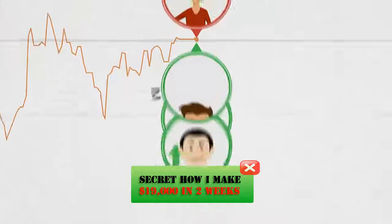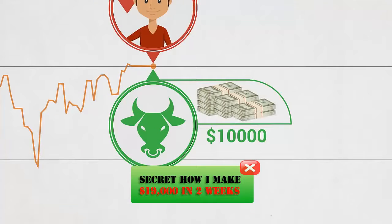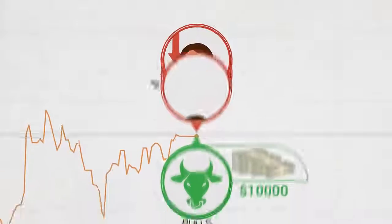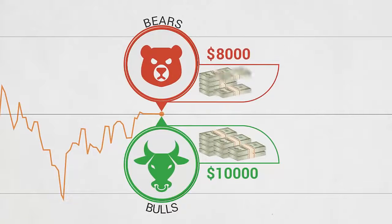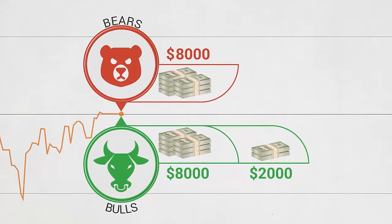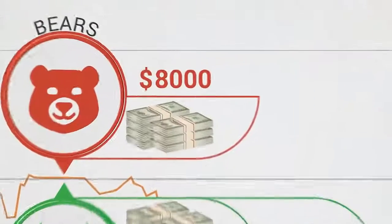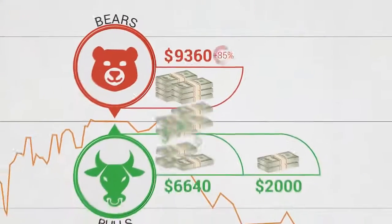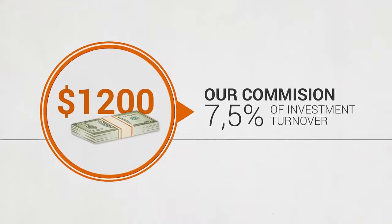But on the IQ Option platform, thousands of traders are trading at any given time. The group of traders along with Jim — let's call them the bulls — invested $10,000 on that prediction. At the same time, Tom's group of traders — let's call them the bears — invested $8,000 on the prediction that the same asset's price would go down. There's a discrepancy or tilt of $2,000. If the bears' prediction turns out to be correct and the asset's price goes down, the bears will get a return of 85% on their investment, an amount which is covered by the bulls' investments.